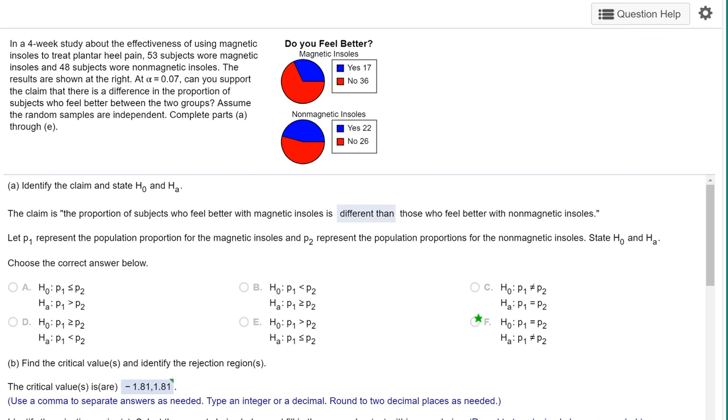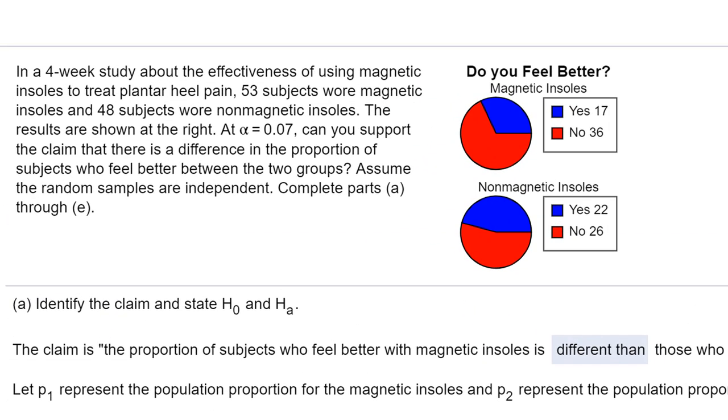Hi, this is Dr. Don. I have a problem out of chapter 8 where we're dealing with the difference in two population proportions. In this problem, we're told that we have a study about the effectiveness of using magnetic insoles to treat a form of heel pain. It tells us that 53 subjects wore the insoles, 48 did not wear the magnetic insoles, were given an alpha. And we want to answer the question, can you support the claim that there is a difference in the proportion of subjects who felt better? We assume the random samples are independent.